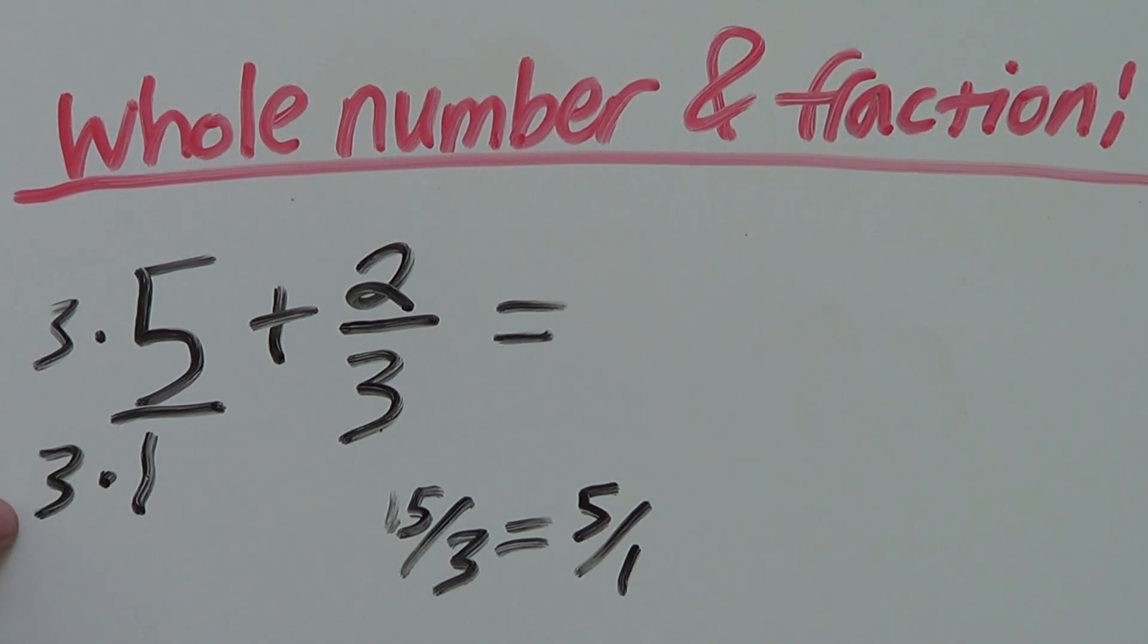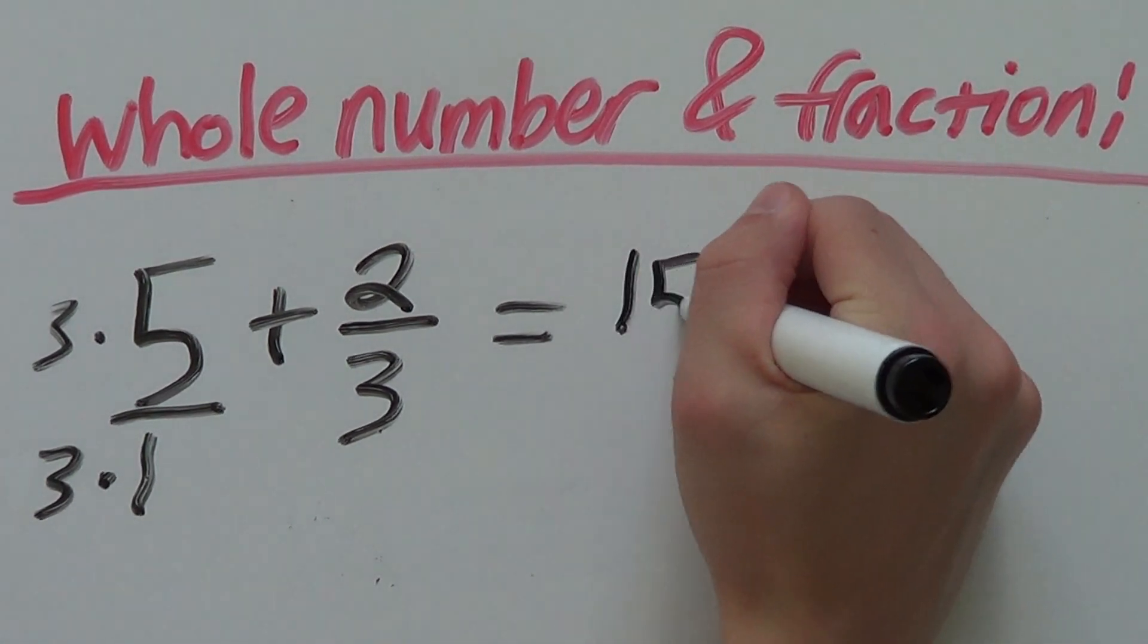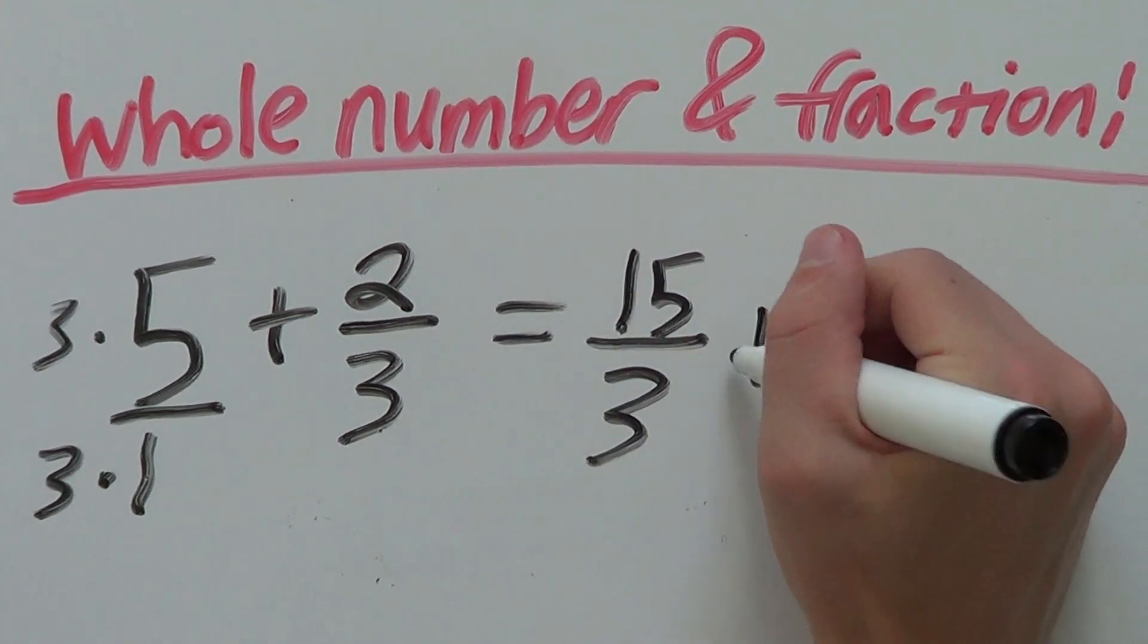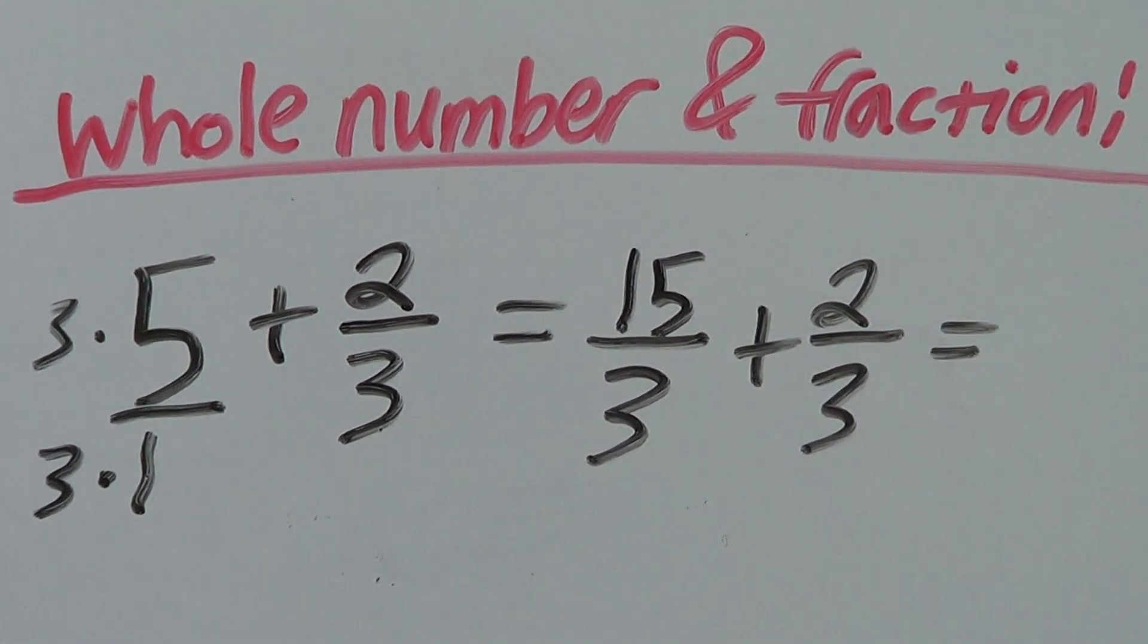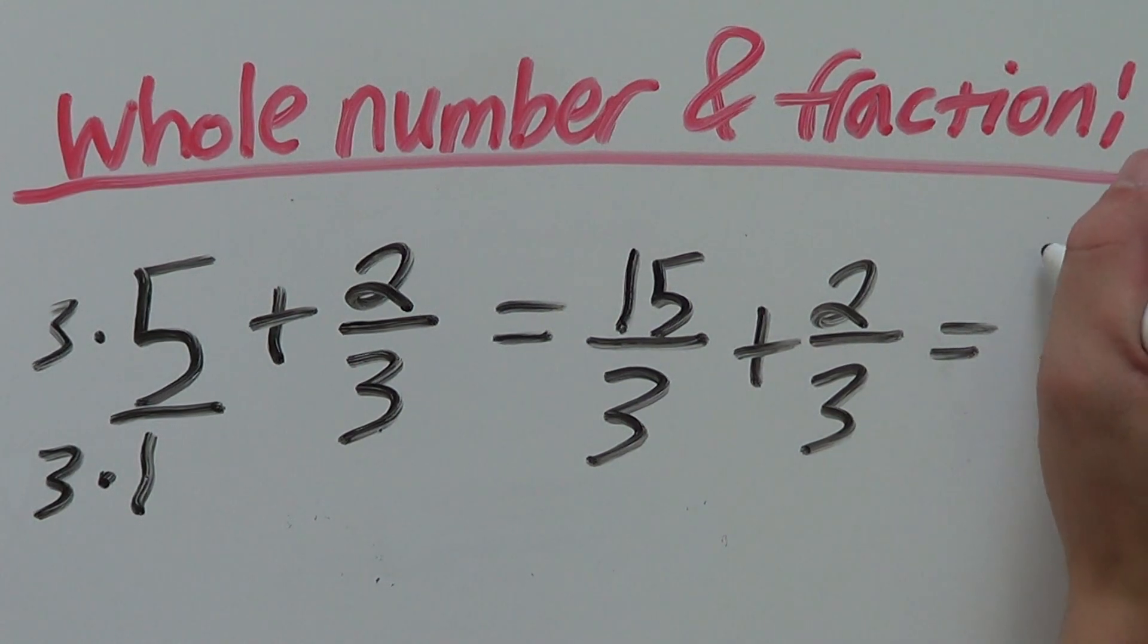What you do to the bottom, you also have to do to the top. This gives us a new problem of 15 over 3 plus 2 over 3, and if we add that across, we get 17 over 3,